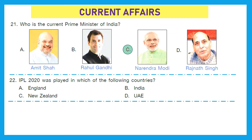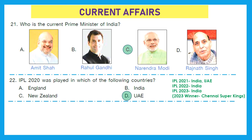Question 22: IPL 2020 was played in which of the following countries — New Zealand, India, England or UAE? The right answer is option D — UAE, United Arab Emirates. IPL 2021 was co-hosted by India and UAE, IPL 2022 was hosted by India, and IPL 2023 was also hosted by India.